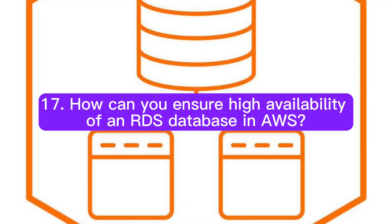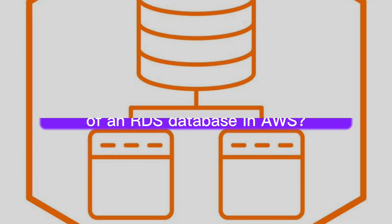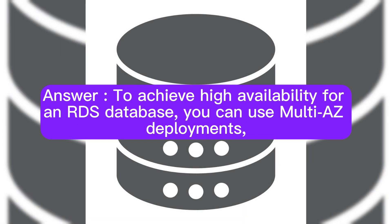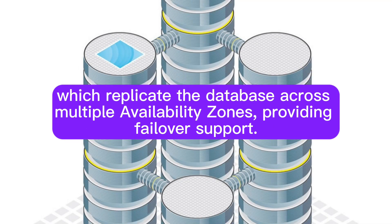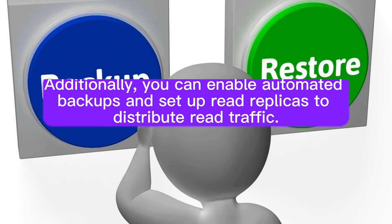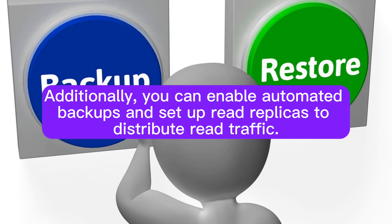Question 17: How can you ensure high availability of an RDS database in AWS? To achieve high availability for an RDS database, you can use multi-AZ deployments, which replicate the database across multiple availability zones, providing failover support. Additionally, you can enable automated backups and set up read replicas to distribute read traffic.